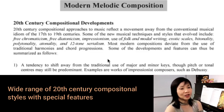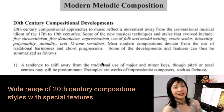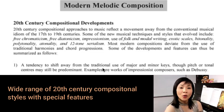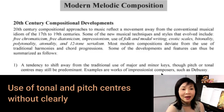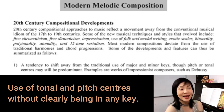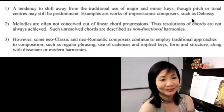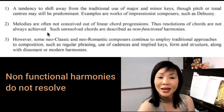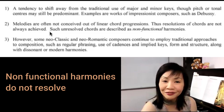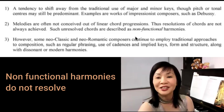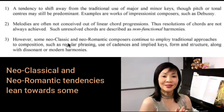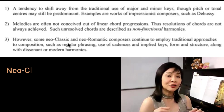So what are the features that mark a work different from traditional work? What are the modern 20th century developments? Most of the modern works tend to deviate from the use of traditional major and minor keys. They may involve some tonal or pitch centers, like in the works of Debussy. Often, the melodies are not conceived out of traditional chord progressions, so you can have the resolutions of chords not being achieved — these are known as non-functional harmonies. However, some composers, more prone towards classical or romantic styles, will tend to take a more conventional and traditional approach.